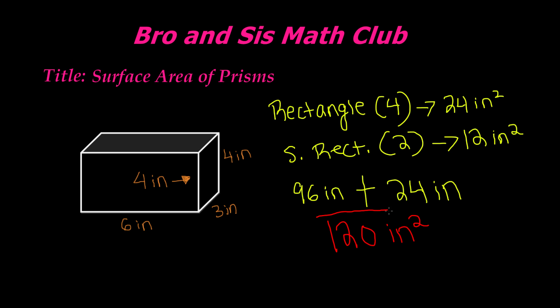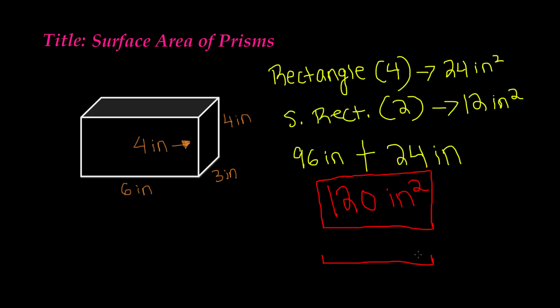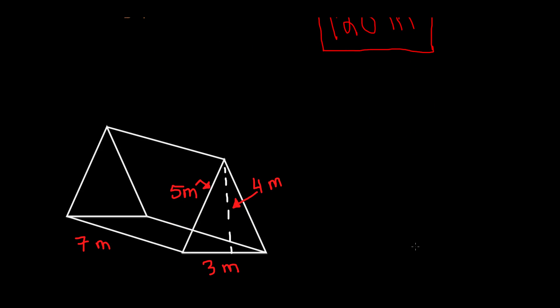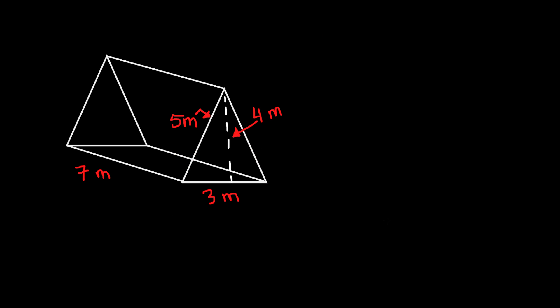So it's not really that hard. All you have to do is find the separate areas first and then add them together to find the total area, which is the surface area. Now let's go ahead and take a look at this triangular prism.